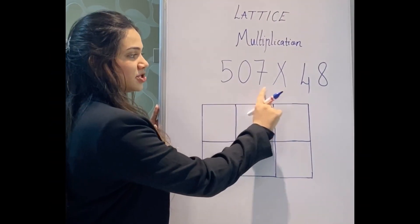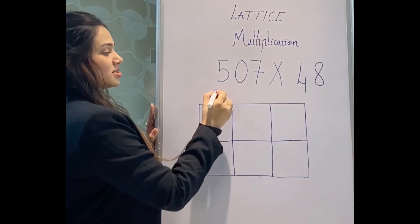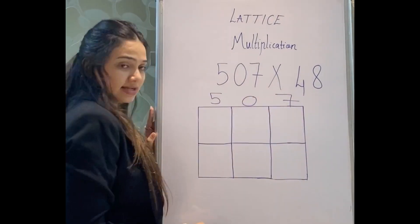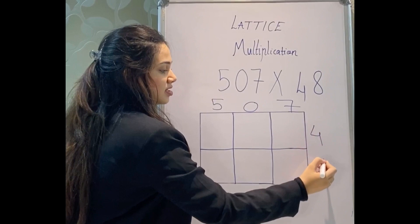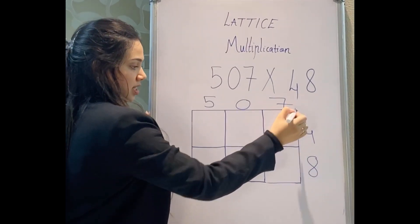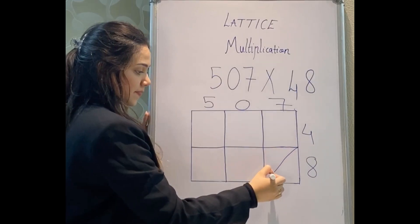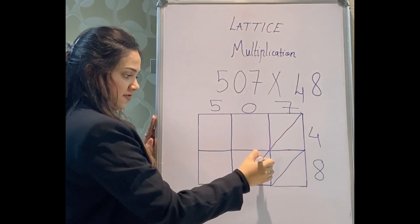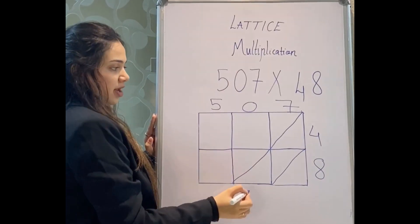Now I have three digits by two digits, so 507 will be written here and 48 will be written here. And adding these lines, and adding these lines—make sure they are connected from one end to the other.